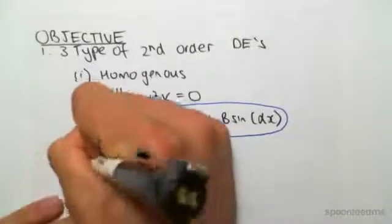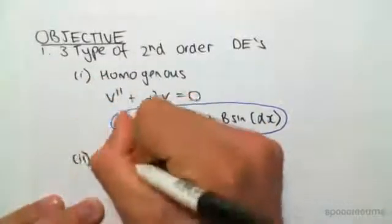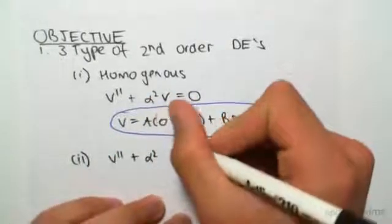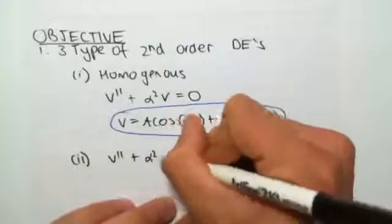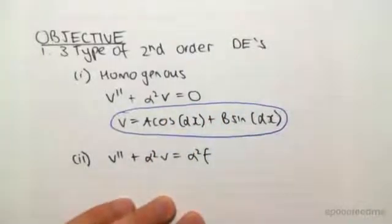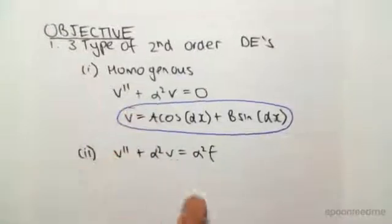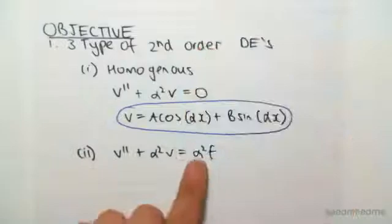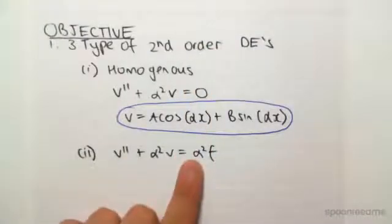Now, the second type looks something like this. We're going to have v double dash plus alpha squared v equals alpha squared f. Okay? So, we have v double dash plus alpha squared, so the left-hand side looks the exact same what we had previously. But now, it doesn't equal zero, it equals alpha squared...